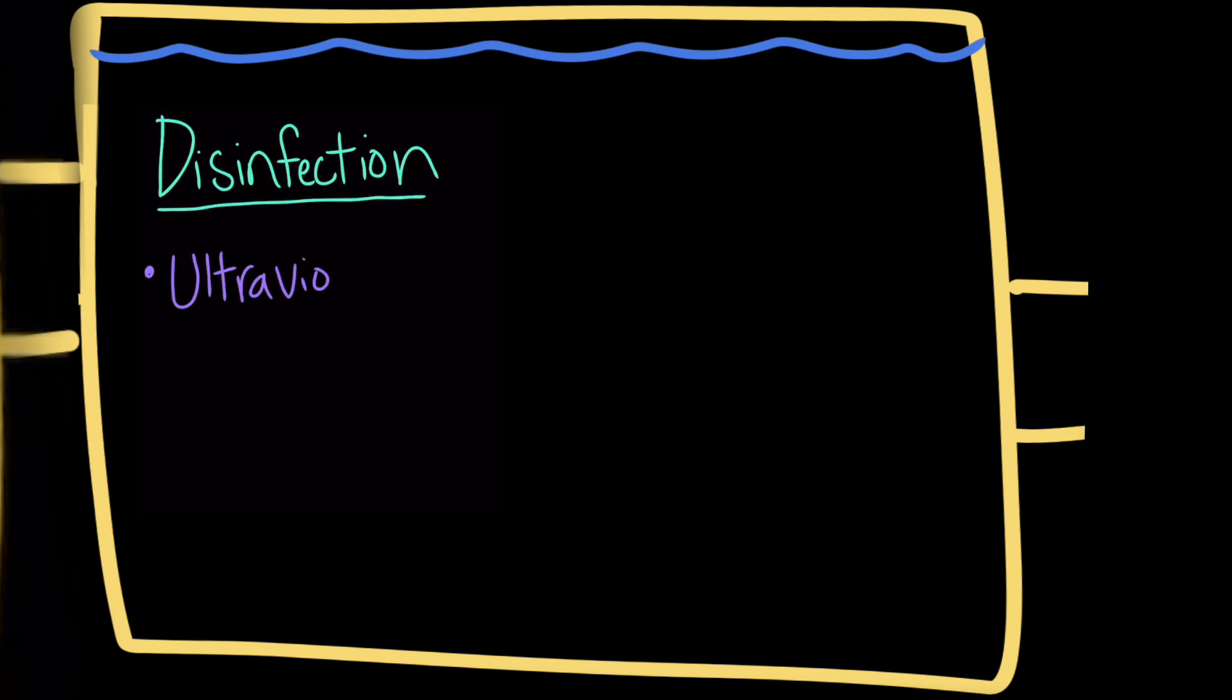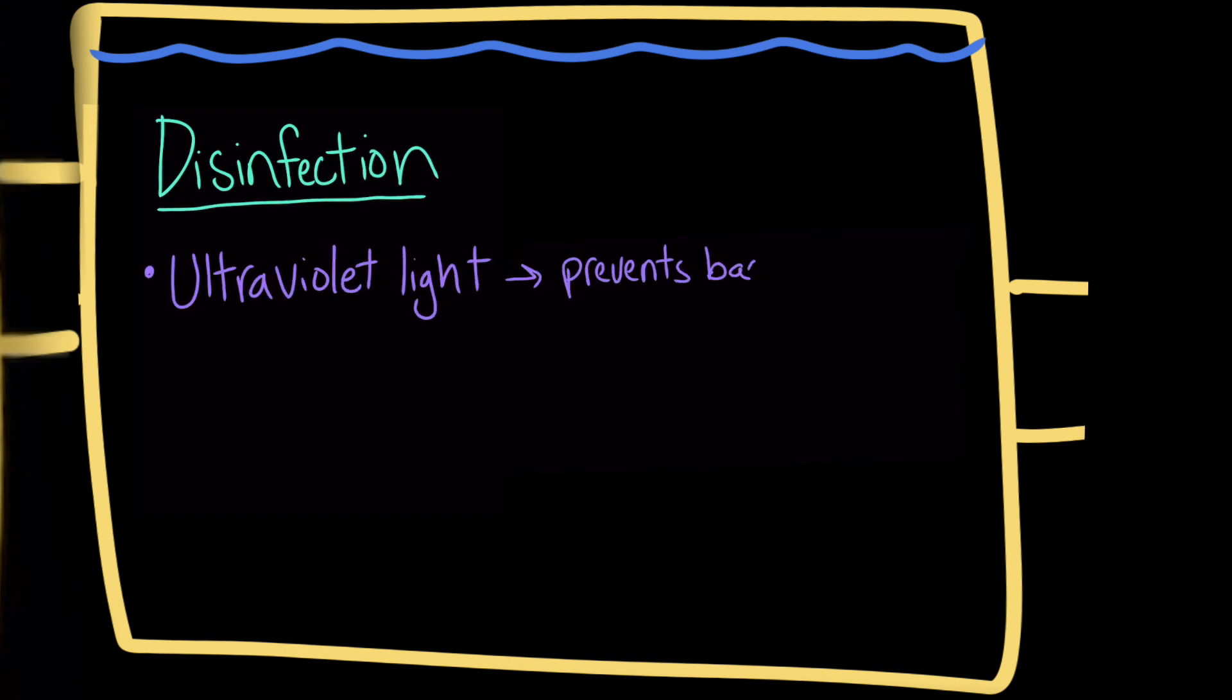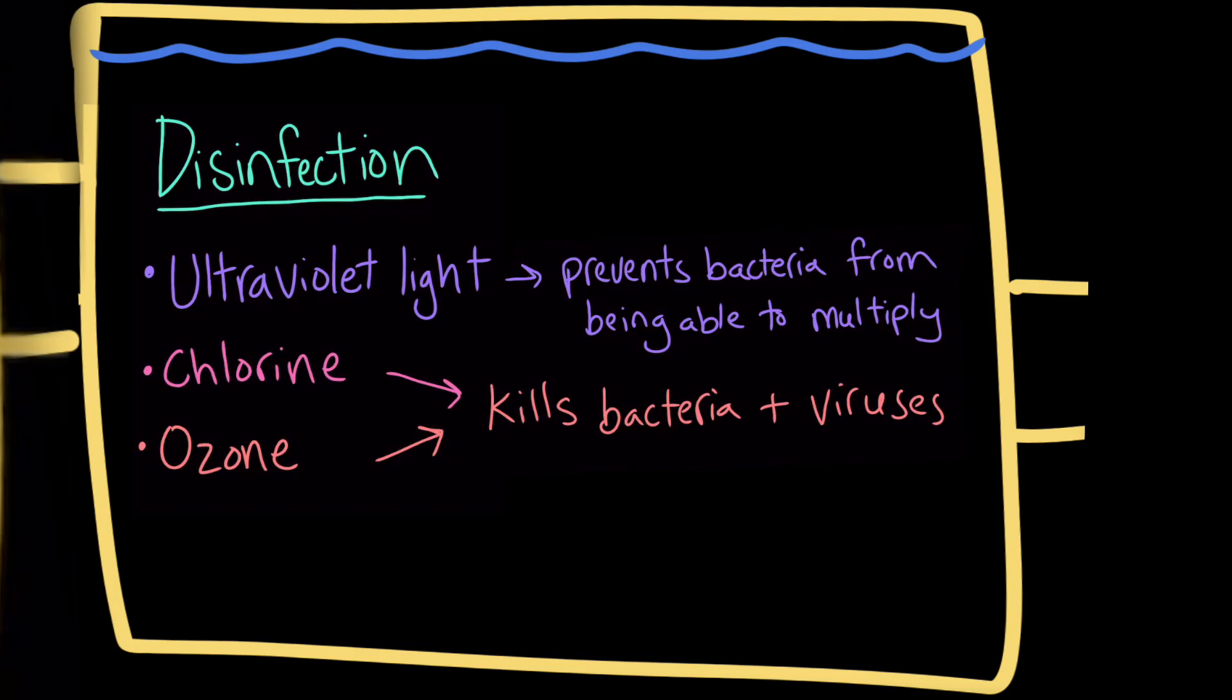Some treatment plants may use ultraviolet light treatment to prevent disease-carrying bacteria from being able to multiply. Or treatment may use chlorine or ozone treatment processes to kill bacteria and viruses. Chlorination will kill more than 99% of the harmful bacteria.